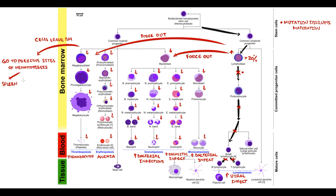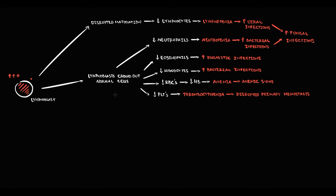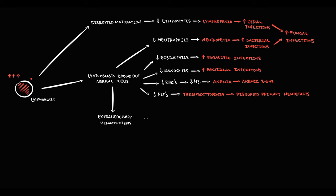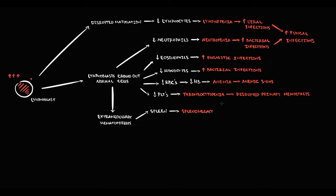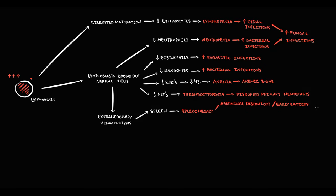Normal cells forced out of the bone marrow return to previous sites of hematopoiesis — the spleen, lymph nodes, and liver. Cells first migrate to splenic tissue, and as the quantity of cells in the splenic tissue increases, the spleen enlarges. Enlargement of the spleen is called splenomegaly. Splenomegaly manifests with abdominal discomfort and early satiety, which causes loss of appetite.